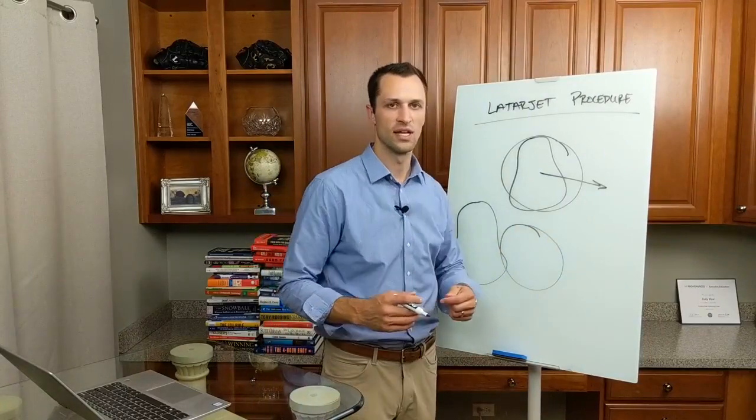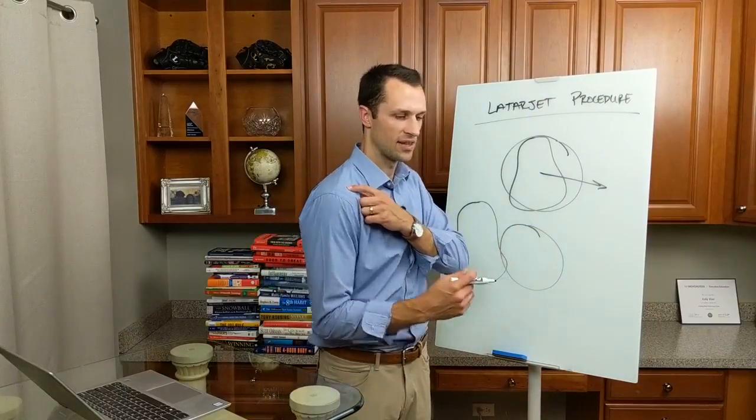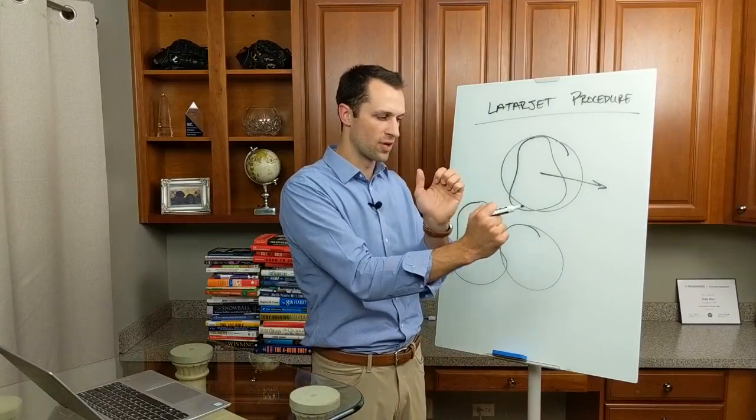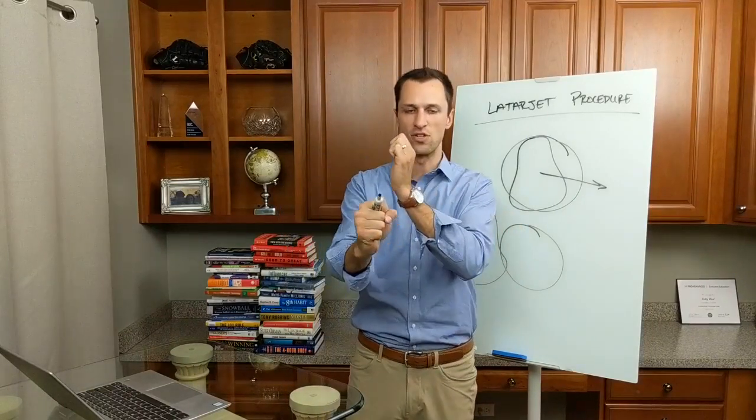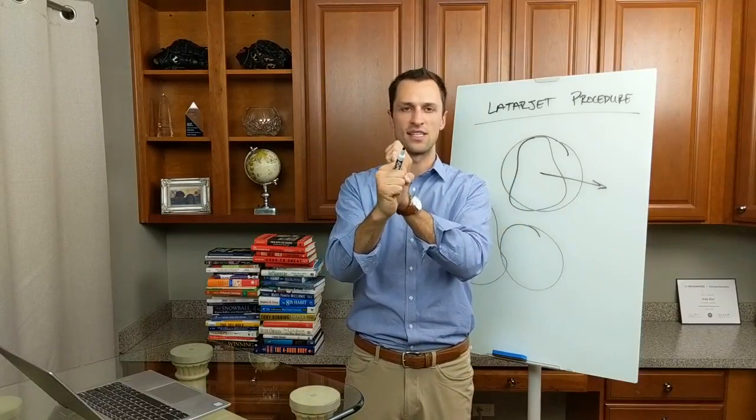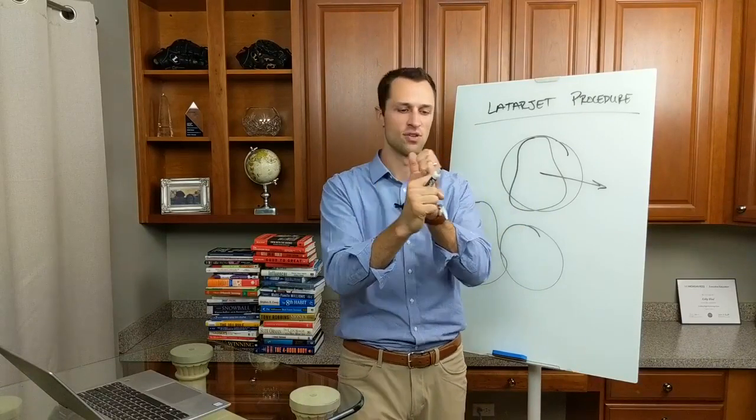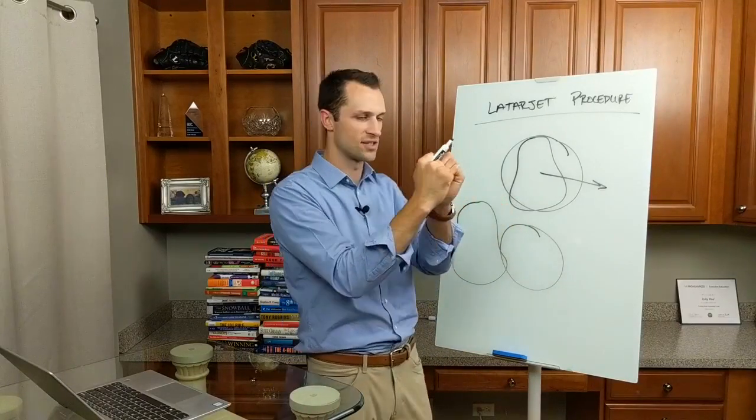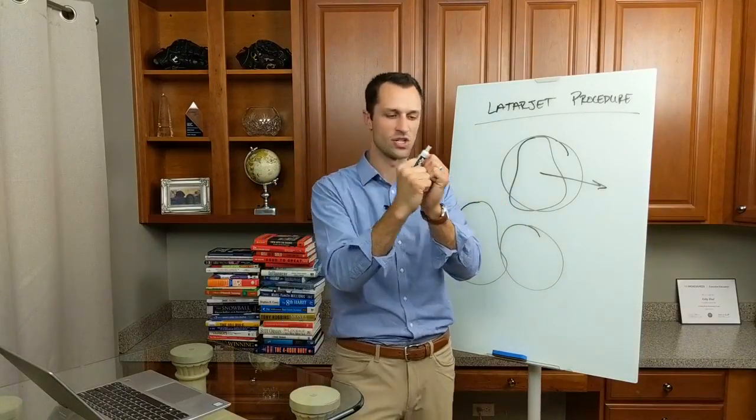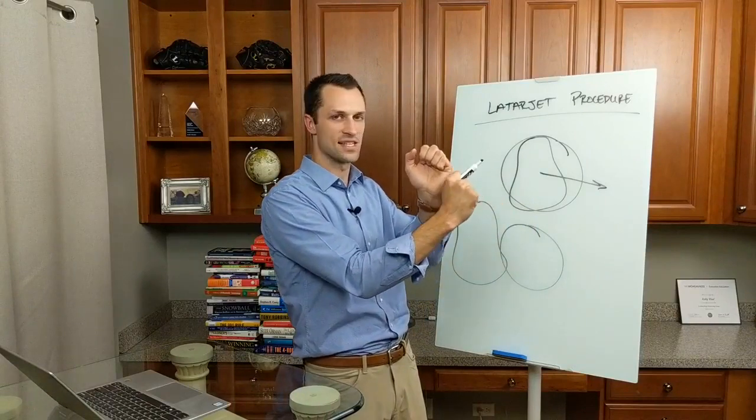What happens though is that as I dislocate, the humeral head comes forward, but then as it springs back into place a lot of times it's going to bang into the side of the glenoid. So as I dislocate, yes it comes out, but instead of coming back and just re-approximating in the correct location, it's actually going to bang into the side of the glenoid.